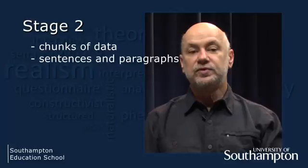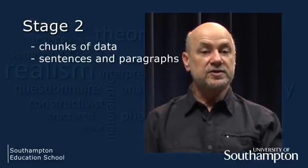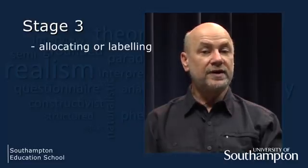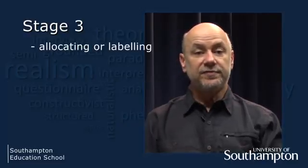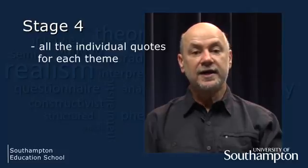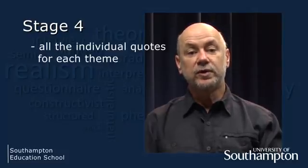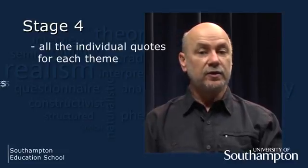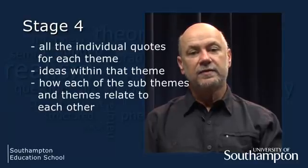Stage two involves breaking up the interviews into chunks of data. For a more deductive approach, I tend to work with sentences and paragraphs. Stage three involves allocating or labelling each sentence or paragraph with a closed code from my list of themes. I do this by having different coloured highlighting pens for each of my themes. For stage four, I bring all the individual quotes for each theme together. This literally involves cutting up my interviews with scissors and putting all the quotes highlighted in a particular colour together. I then examine that theme and look for ideas within it, which become my sub-themes.